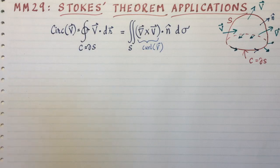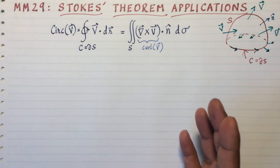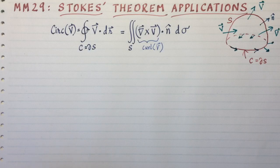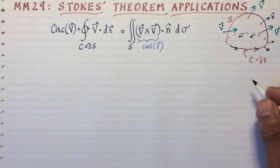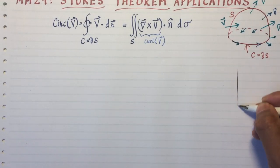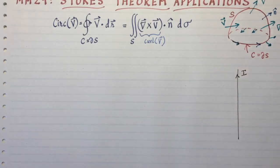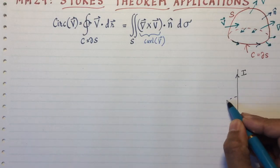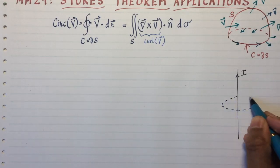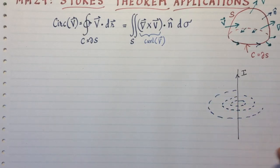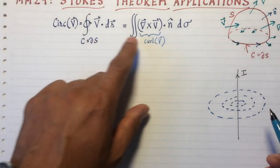Now Stokes' theorem is very useful when you have things that depend on circulation. A classic example in physics is the magnetic field of a wire. If you have a wire carrying current, you usually study this in elementary University Physics 2 or something, someplace like that. The magnetic fields are going to be concentric circles around the wire. You can actually find the magnetic field around a wire carrying current using Stokes' theorem.